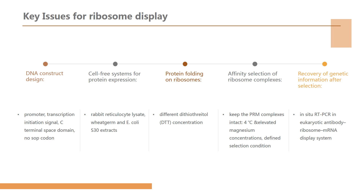For affinity selection of ribosome complexes, it is essential to keep the PRM complexes intact during selection. This is achieved by maintaining the complexes at 4°C with elevated magnesium concentrations. A defined selection condition or strategy often results in the production of proteins with desired properties. Retrieving genetic information after selection is a critical step for efficient display. A novel in-situ RT-PCR recovery procedure has been developed for the eukaryotic antibody-ribosome-mRNA (ARM) display system and has been shown to be efficient for DNA recovery.